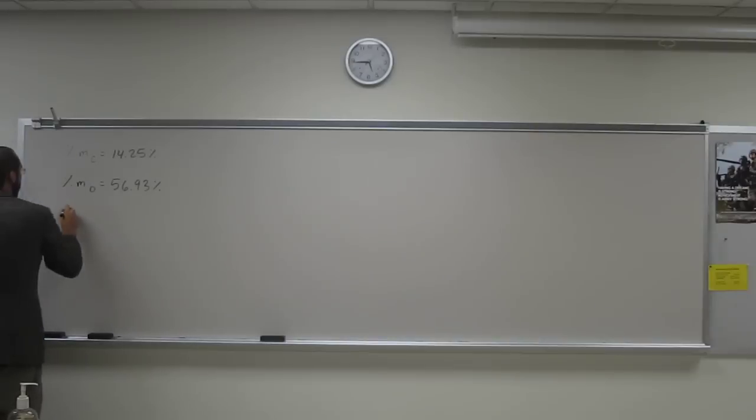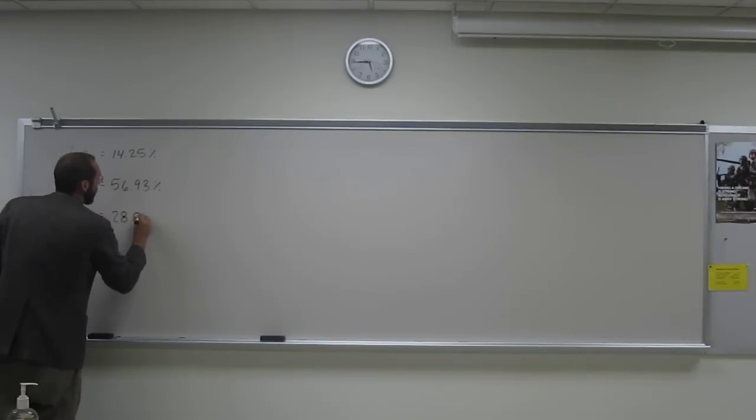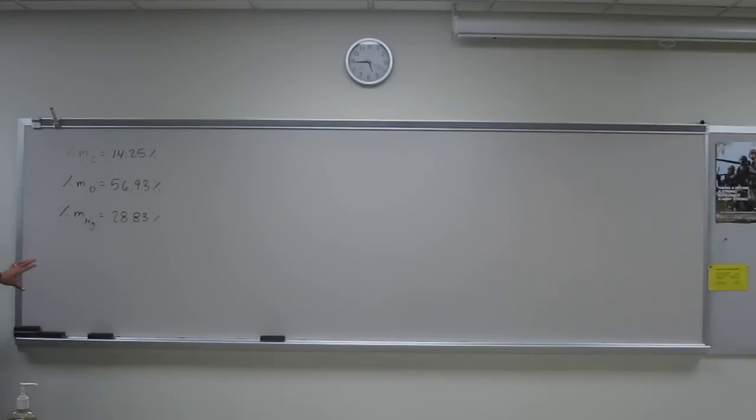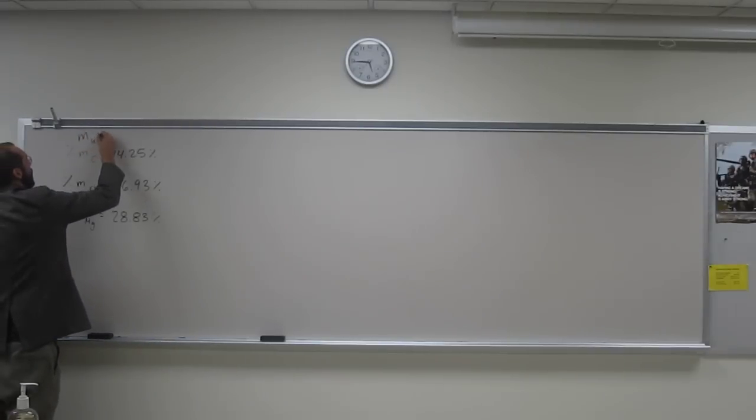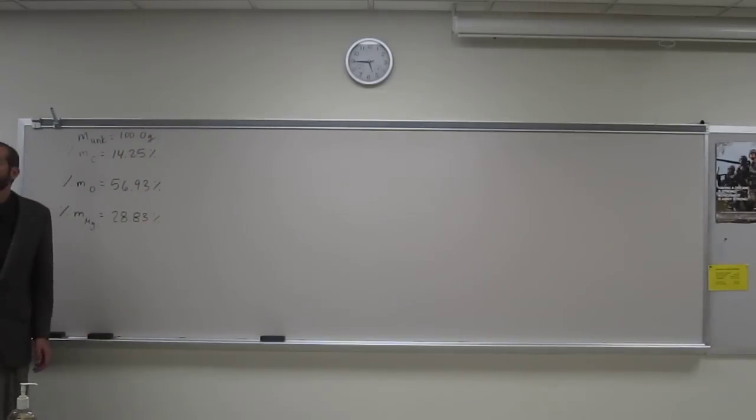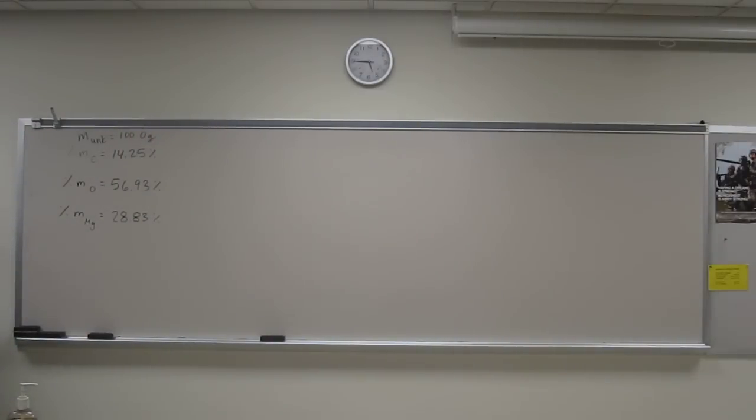And then the percent mass of magnesium is 28.83%. Okay, so this is percent of, you know, who knows how much mass you might have started out. So because you don't know that, the way I do it is just to set it all equal to 100 grams of unknown. Okay, so if we do that, if we say the mass of the unknown equals 100 grams, like that, is everybody okay with what I'm doing so far?